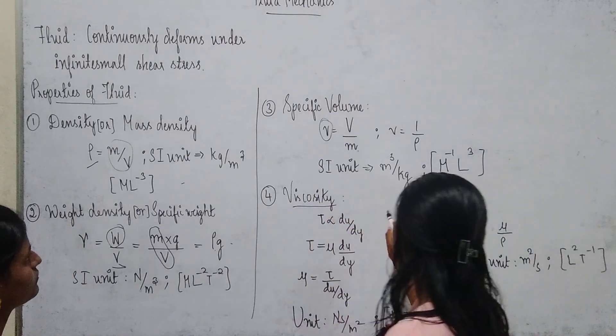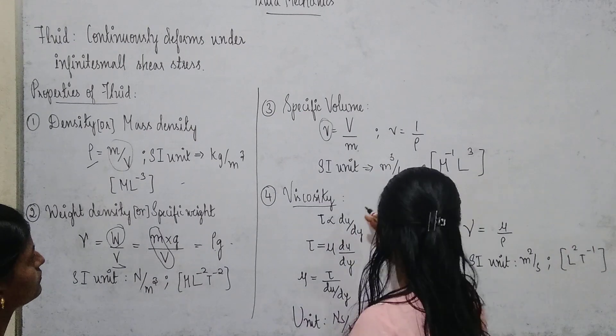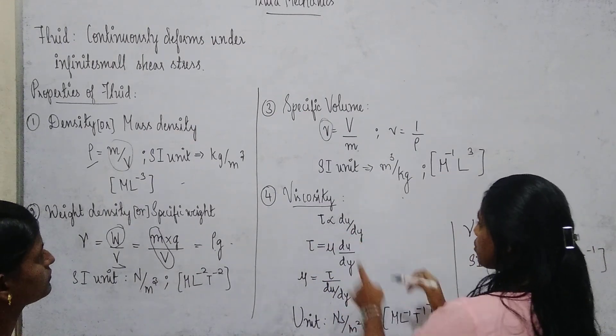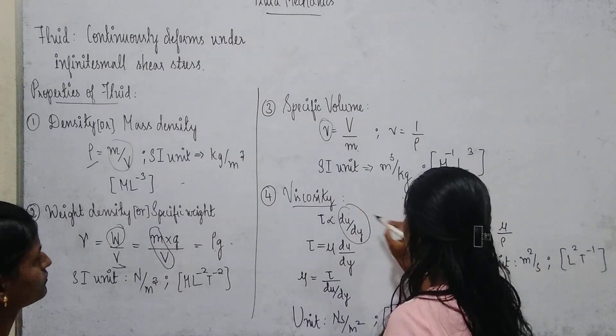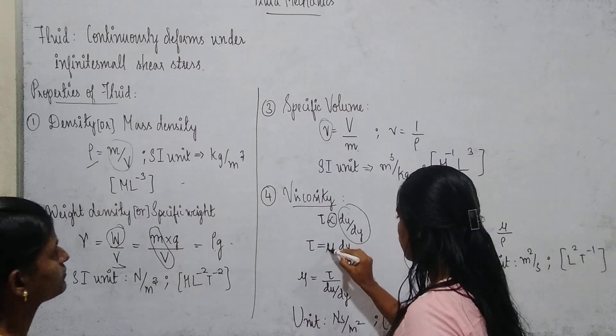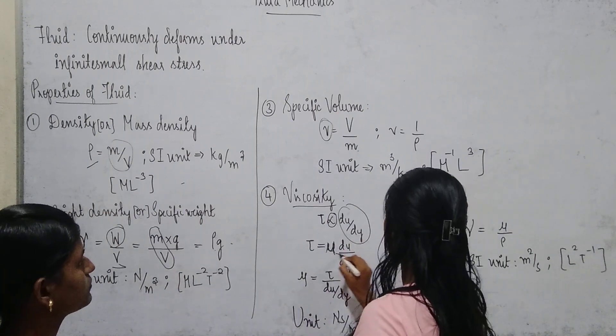Fourth one is viscosity. To derive the formula, firstly we take shear stress which is directly proportional to du by dy. In order to remove this proportionality constant, we take this mu. This mu is called dynamic viscosity.